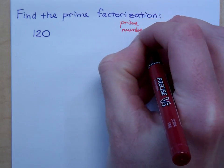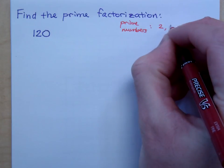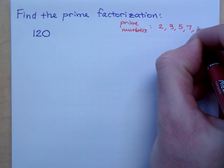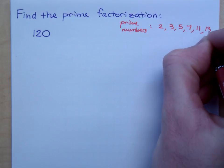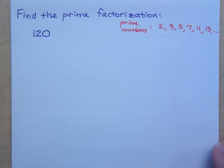So, your first prime numbers would be 2, 3, 5, 7, 11, 13, and so on, right? These are your first prime numbers.